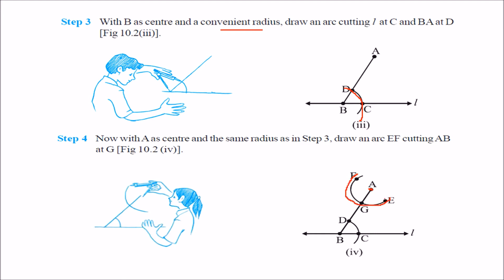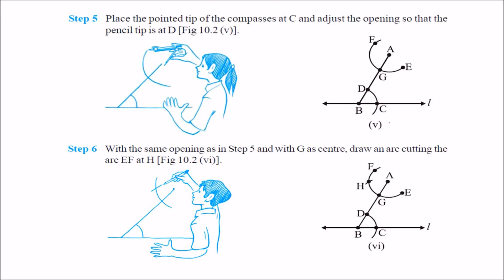Take that same radius and placing it at A, make another arc. Now place your pencil tip and your compass point such that you can stretch to get the distance DC. Place the pointed tip of the compass at C and adjust the opening so that the pencil tip is at D. With this you have measured an angle. Now place the compass with this same opening at the arc near A and cut a new mark — call it E. Join A to E; this line will be parallel to line L.